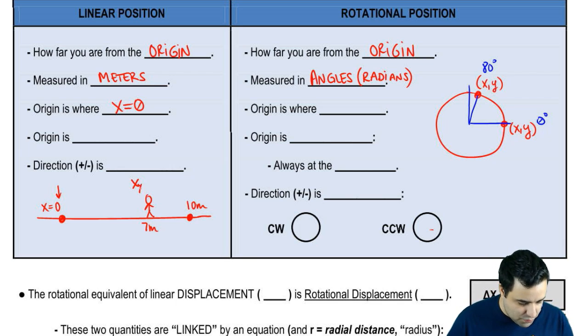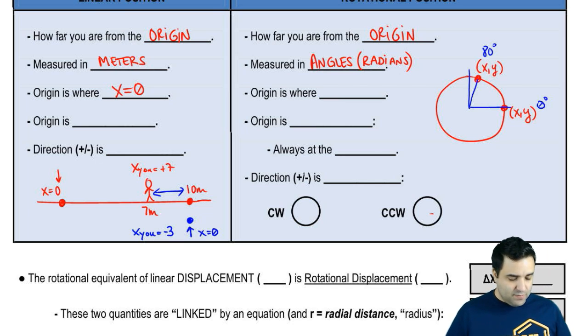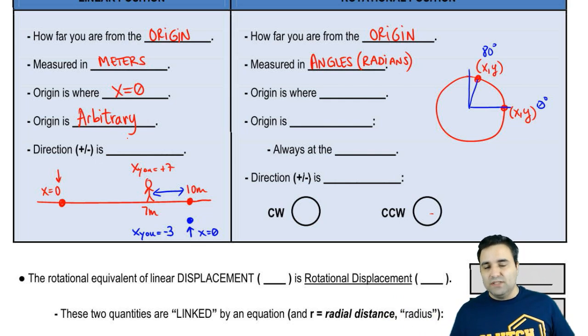We could have done this a little bit different. We say that your position, xu, is plus seven. But we could have put the origin right here. We could have arbitrarily said, I want this to be x equals zero, and then this distance here is three. So your xu would have been negative three. And the point that I'm trying to make here is that origin in linear position is arbitrary. Arbitrary meaning up to you. You can change it, and sometimes the problem will tell you, but it could change. It doesn't have to be a fixed thing.